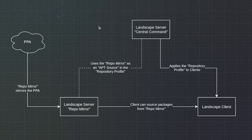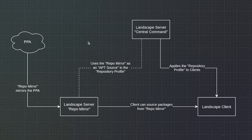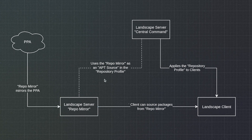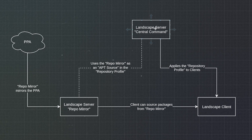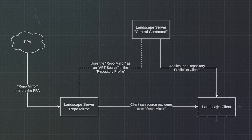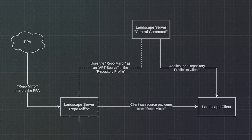Hi, this is Spencer Runde with the landscape team at Canonical. I'll be walking you through how to create a repository mirror on one Landscape server that I've called RepoMirror, and that's going to be used as an apt source for another Landscape server called CentralCommand. CentralCommand is responsible for applying repository profiles to clients that will instruct them to source packages from RepoMirror.